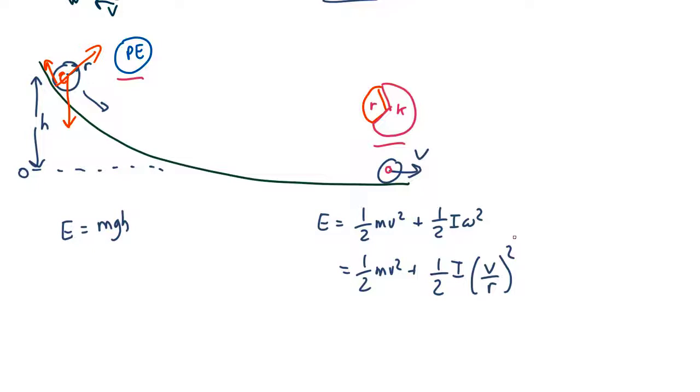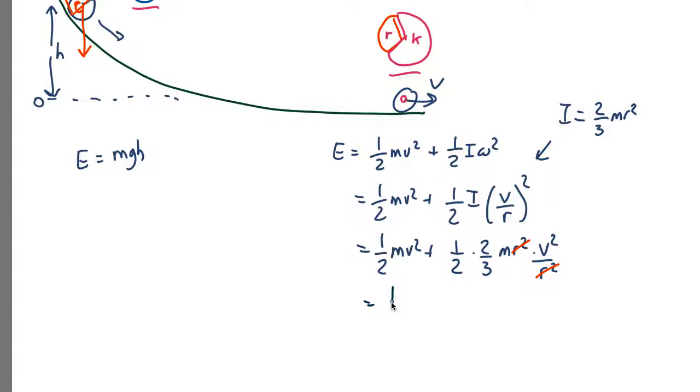Now for a soccer ball that's a hollow ball. We can look up the moment of inertia for that and for a hollow ball the moment of inertia is two-thirds m r squared. So put that in we get the total energy at the end is a half mv squared plus a half times two-thirds m r squared times v squared over r squared. So the radii cancel out and we get half m v squared plus one-third m v squared.